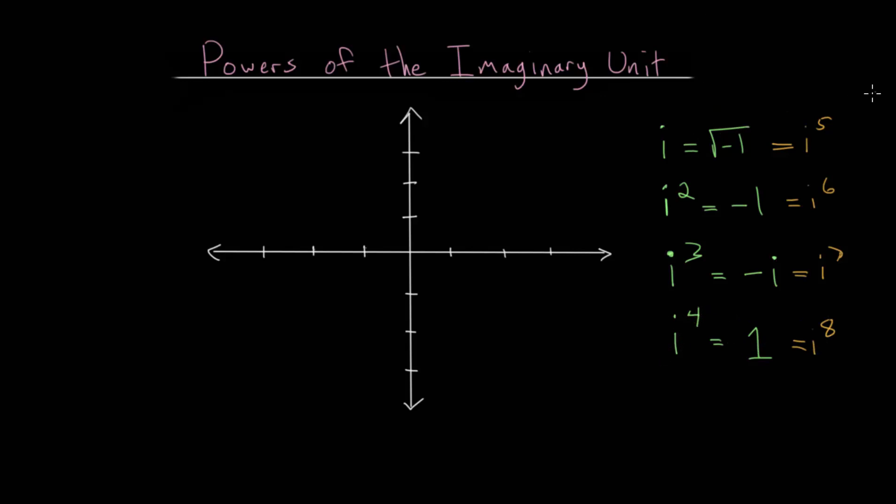Essentially, every time the exponent is increased by four, it just goes back to that same value in the cycle. So i to the fifth, i to the first, these are equal to i to the ninth, i to the thirteenth, and so on. i to the sixth is the same thing as i to the tenth and i squared. i to the seventh is the same thing as i to the eleventh. And i to the eighth is the same thing as i to the twelfth and i to the sixteenth. So they cycle every time the exponent is increased by four.